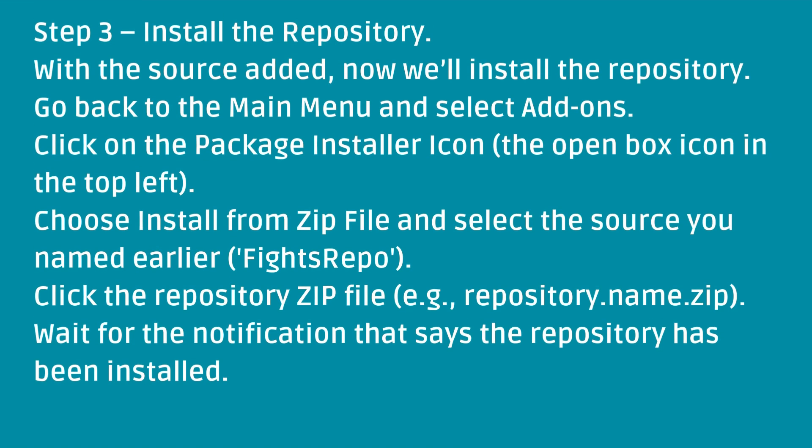Step 3: Install the repository. With the source added, now we'll install the repository. Go back to the main menu and select add-ons. Click on the package installer icon — the open box icon in the top left. Choose install from zip file and select the source you named earlier, Fights repo. Click the repository zip file, e.g. repository.name.zip, and wait for the notification that says the repository has been installed.